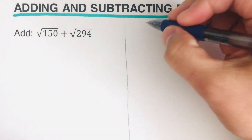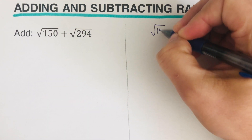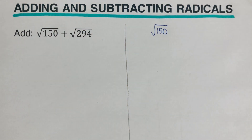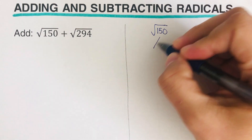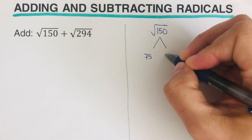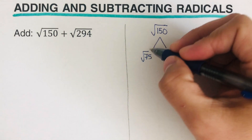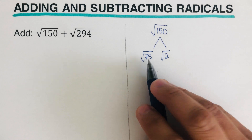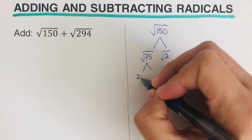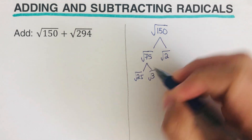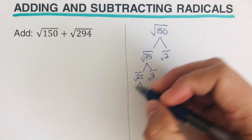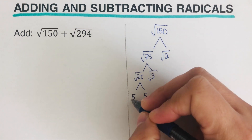Let's start with the square root of 150. What we're going to do is divide 150 by a prime number, starting with 2. So 150 divided by 2 equals 75 times 2. If we multiply 75 times 2 we get 150. Then we take the square root, and 75 can be divided by 3, giving us 25 times 3. And 25 can be divided into 5 times 5.